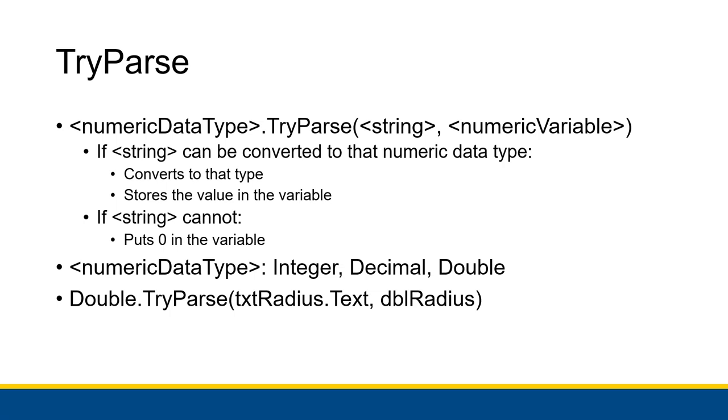Of course, by numeric data type, I mean integer or decimal or double. And for example, we could say Double.TryParse txtRadius.Text, which is the string that we want to try to turn into a double, and then dblRadius, which is the variable that we want to put this converted value into if it's successful. Because we're going to store it as a double, we need to use the double data type dot TryParse. It has to be double if we're trying to put it inside of a double variable.